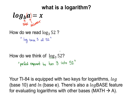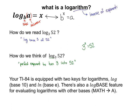Our exponential function was telling us the input is an exponent — like 3 to the x equals 52. We'd say x is the perfect power to put on 3. Now we can write it another way: the logarithm outputs the perfect exponent instead of us inputting it. So log base b of a equals x is saying the same thing as b to the x equals a — the base b raised to that perfect exponent x will become a.